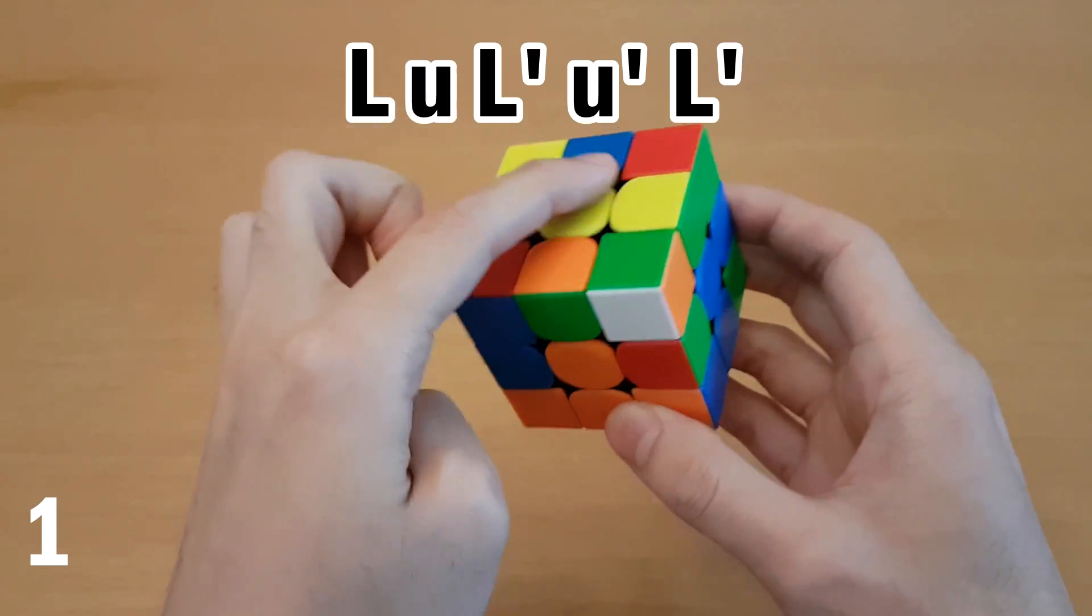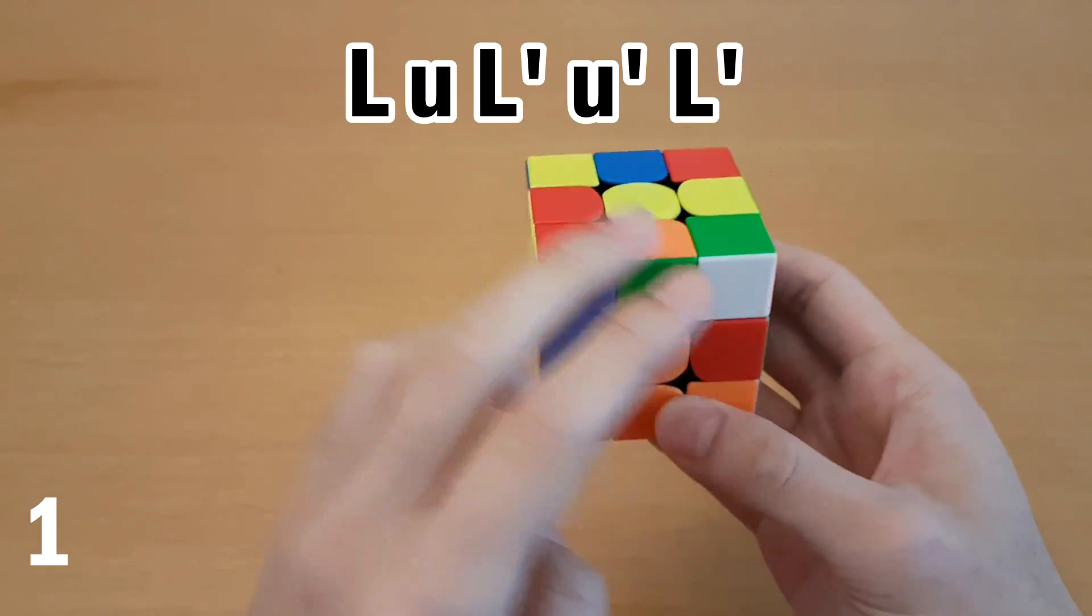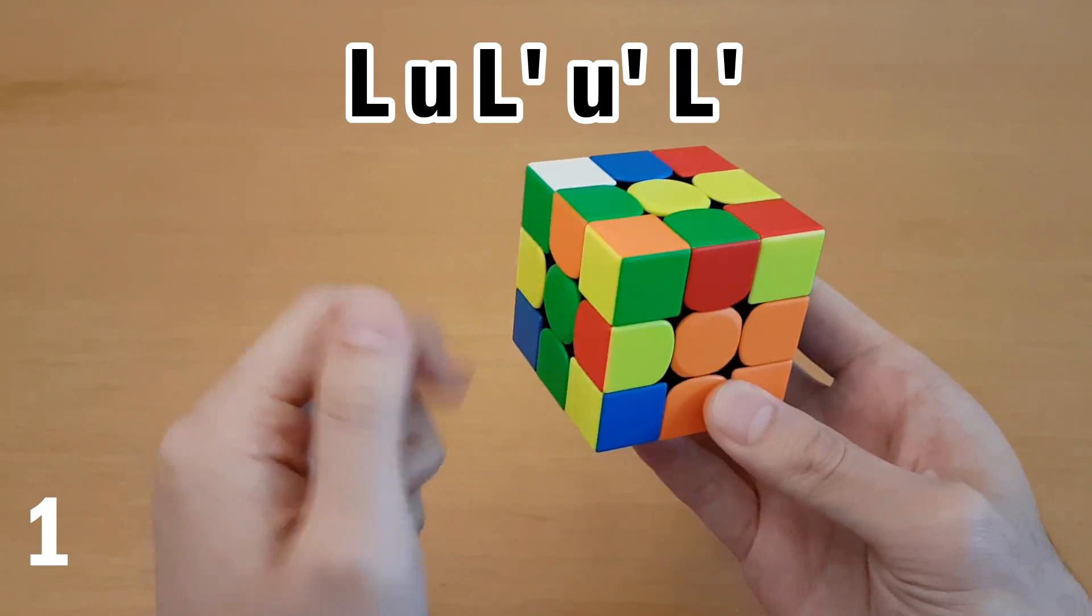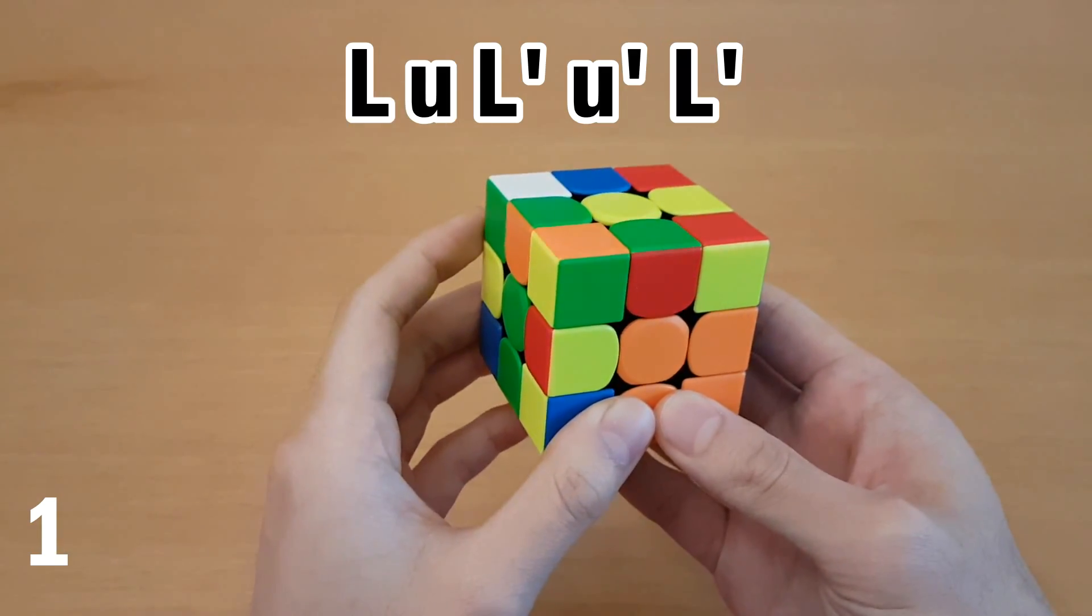For example, this block back here doesn't move, and if you just memorize where this goes, and memorize where this goes, it makes it really easy to see what the next pair is.